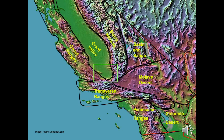California possesses 11 major landform provinces, eight of which are outlined in black on this satellite image. This presentation will focus on seven features of the San Joaquin Valley portion of the Great Valley Province. All features are visible from public roadways. The next slide will show roadways within the green box on this map and locations of those seven features.